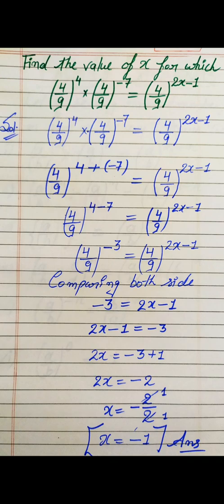Now, students, do not make the mistake of removing the negative power here. In this type of question, we make the bases on both sides the same. As you can see, on the left-hand side the base is 4/9, and on the right-hand side the base is also 4/9. So we can compare both sides — the bases cancel — and we get: 2x − 1 = −3.